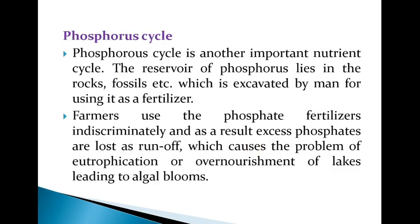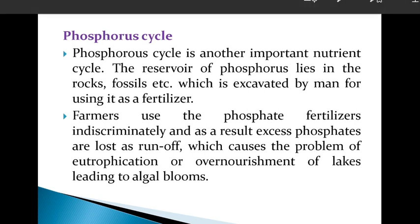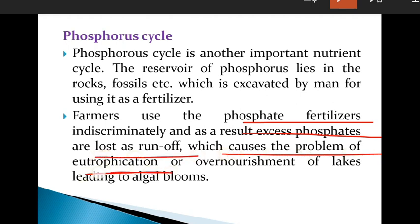Coming to the next cycle — the phosphorus cycle — which is another important nutrient cycle. The reservoir of phosphorus lies in rocks and fossils, which is excavated by humans for use as fertilizer. Phosphorus is one of the important nutrients for plant growth. Humans artificially excavate it and prepare phosphate fertilizers, which are utilized in agricultural fields. Excess phosphates are lost as runoff, which causes the problem of eutrophication.